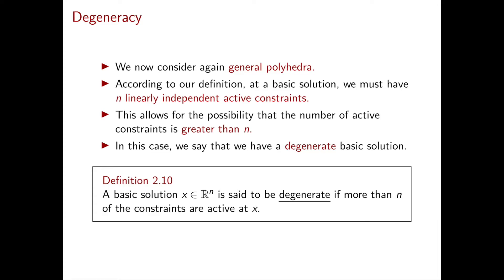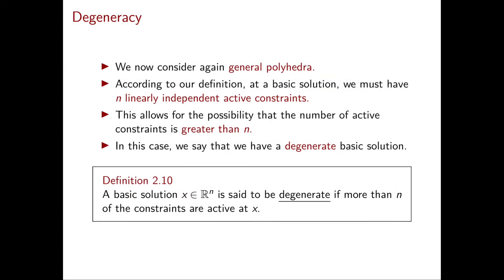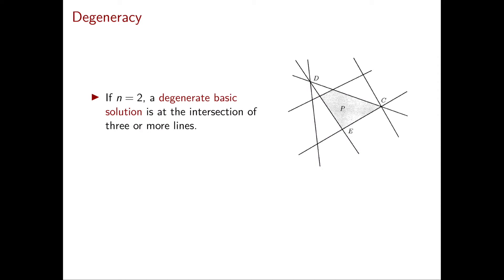A basic solution x in R^n is said to be degenerate if more than n of the constraints are active at x. In dimension 2, we visualize the given inequalities with lines and the constraint is active at the point if the corresponding line passes through such a point.